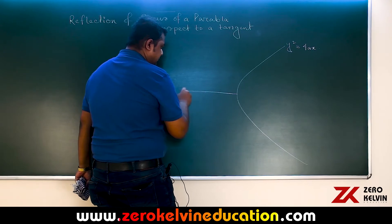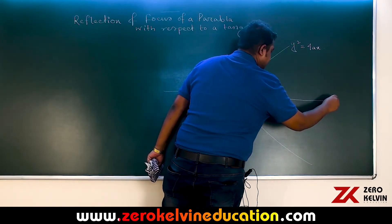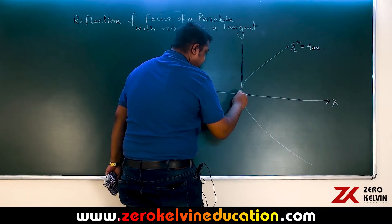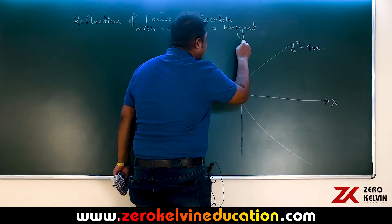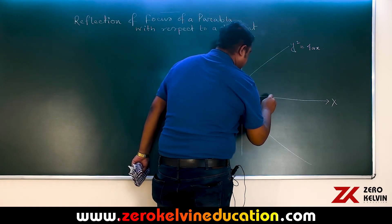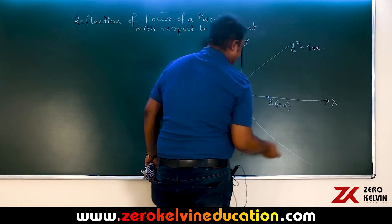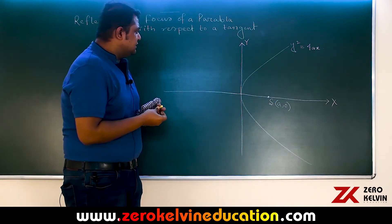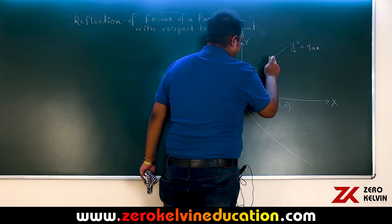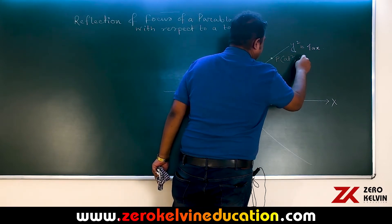The axis of the parabola is the positive x-axis, and this is the tangent at the vertex. This is the y-axis, and the focus is at S, which is (a, 0). Now, if we consider any general point on this parabola, say point P with coordinates (at², 2at).